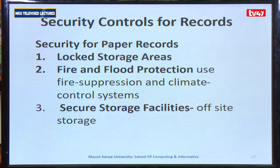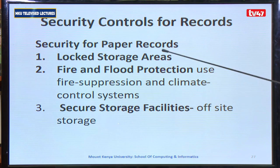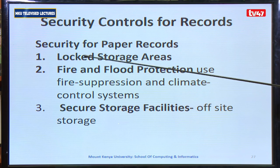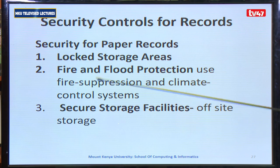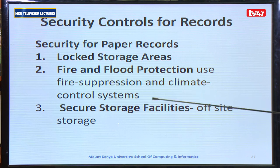After classification and having the process of classifying and securing the data, we need to implement security controls for the records. For all security of paper records, we can have the following measures: locked storage areas whereby the data is safe within cabinets, fire and flood protection using fire suppressors and climate control systems, and a secure storage facility which is an off-site storage so we can recover data in case of fire or similar incidents.